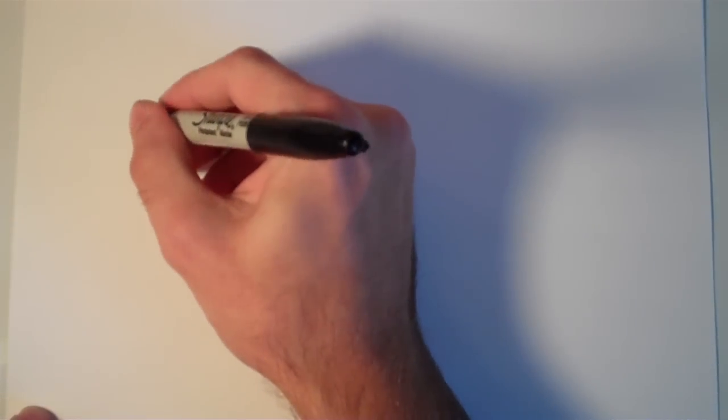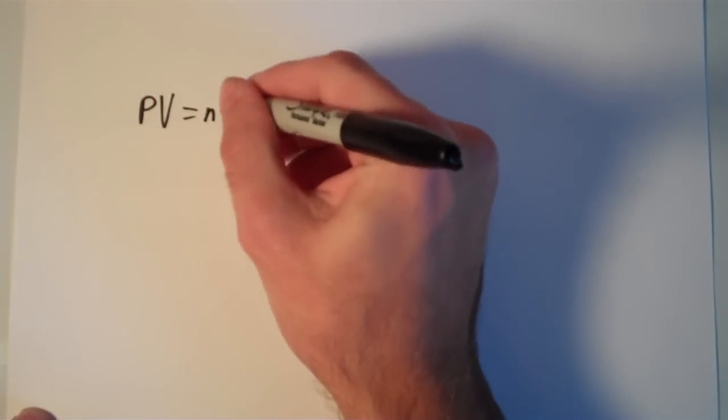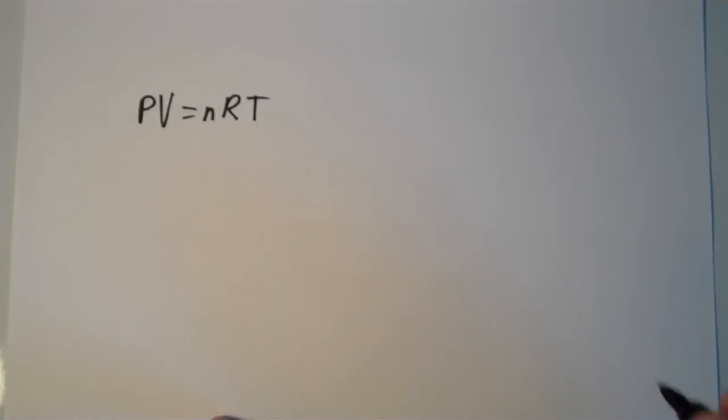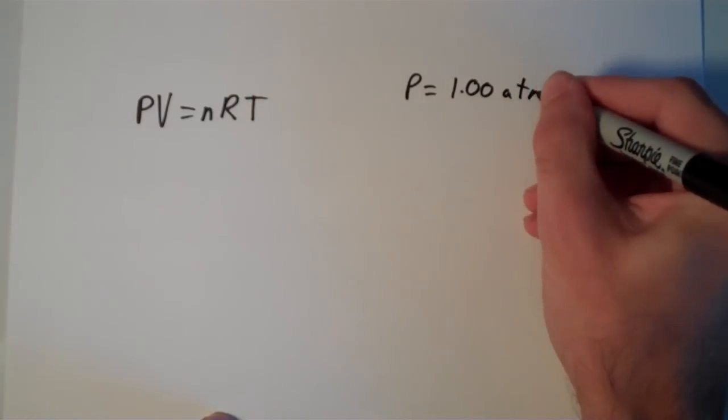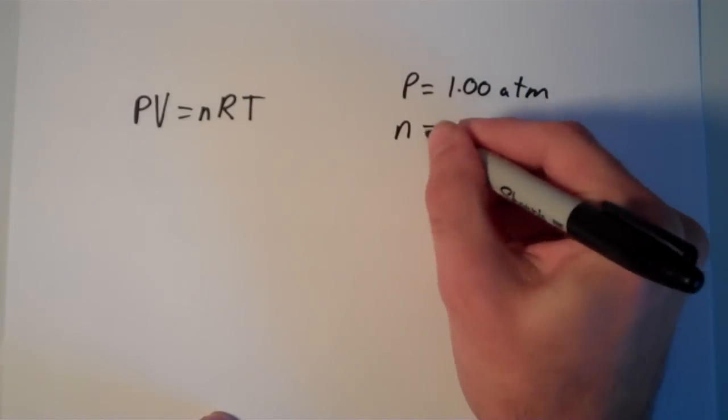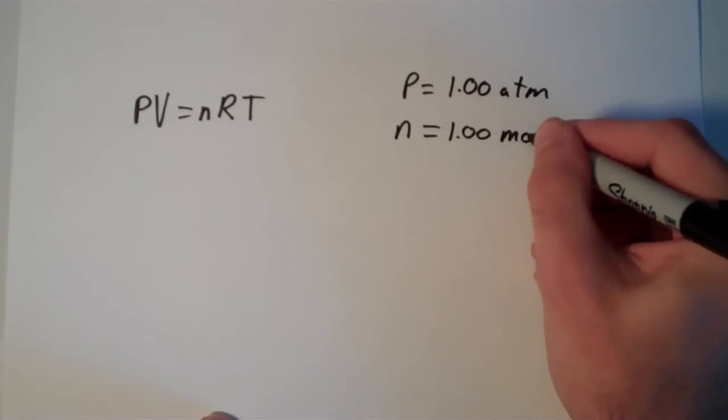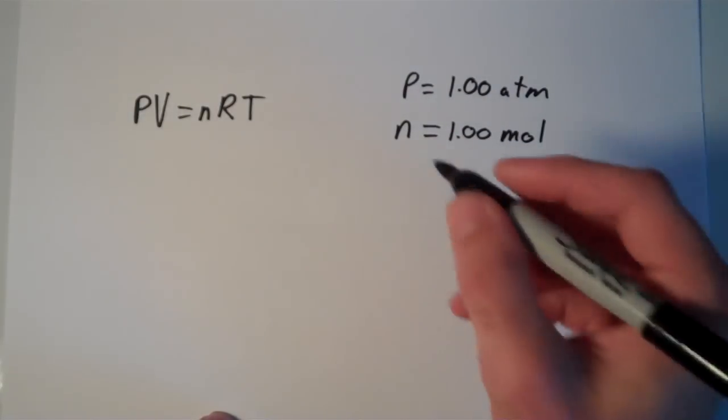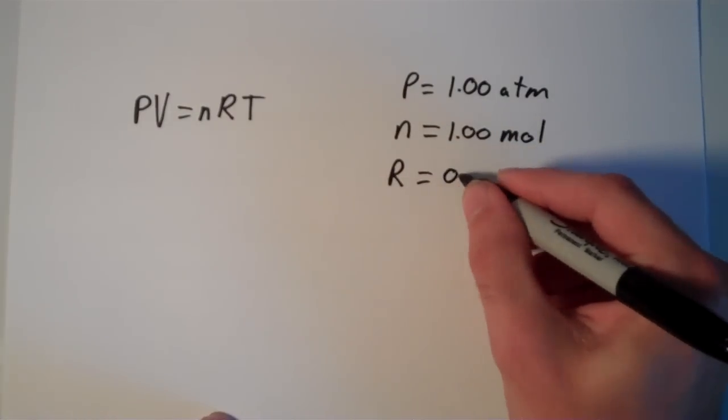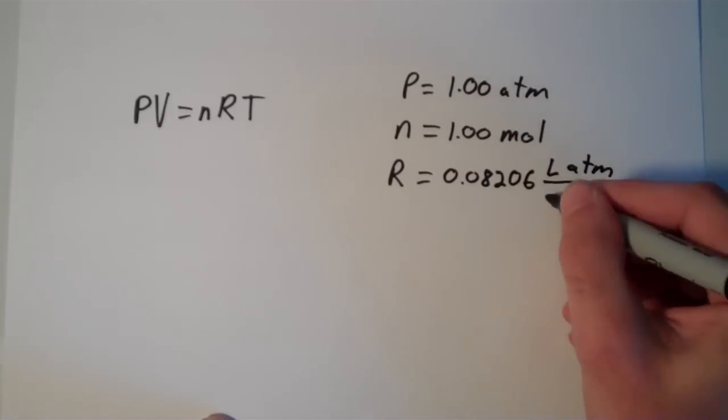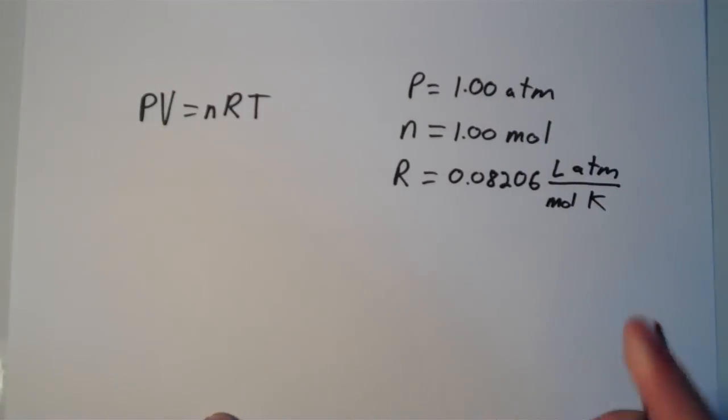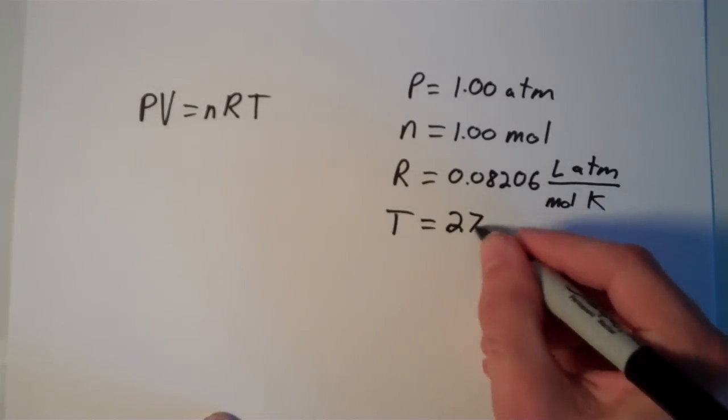So we're going to use the relationship PV equals nRT. Our pressure P, that's going to be 1.00 atm. Our n, by definition, is 1.00 moles. R, that's a constant, which is equal to 0.08206 liters times atmospheres over moles times kelvins. And our T at STP is 0 degrees Celsius or 273 kelvins.